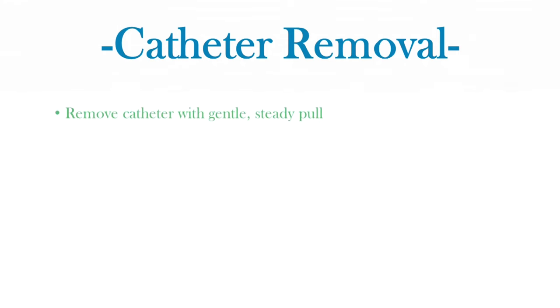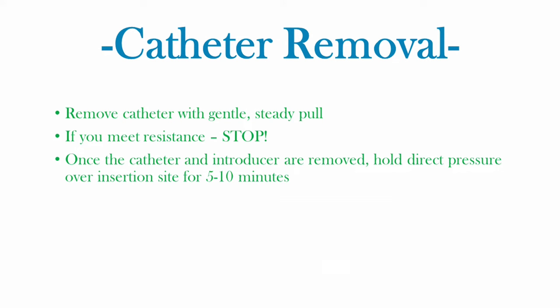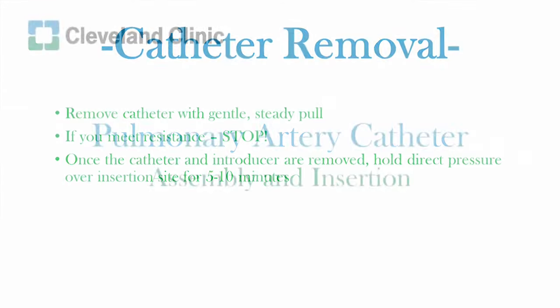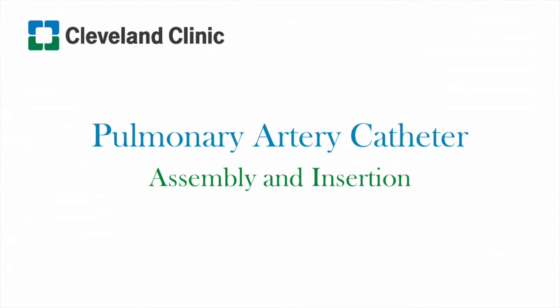Once the catheter is ready for removal, ensure that the catheter balloon is fully deflated. Next, withdraw the catheter with a steady, gentle action. If resistance is felt, stop and assess the patient. Obtain a chest x-ray if necessary. Finally, once the catheter and introducer sheath have been removed, apply firm pressure to the insertion site until hemostasis is achieved. This concludes the tutorial on assembly and insertion of a pulmonary artery catheter. Thank you for watching.